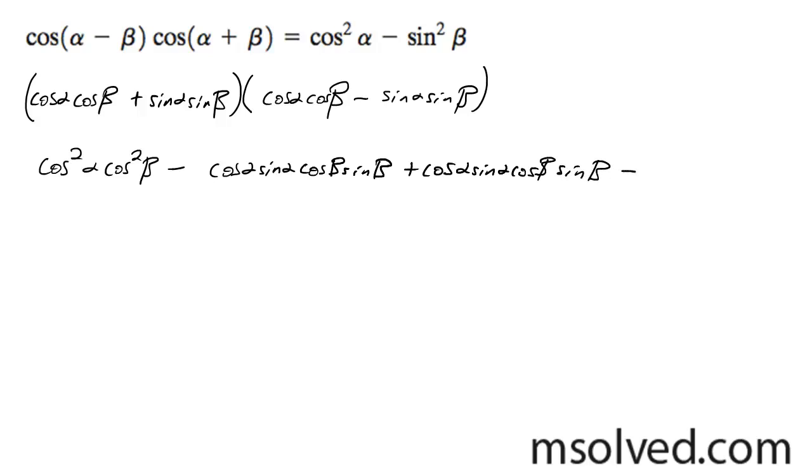And finally, these middle terms cancel out, and we're left with cosine squared alpha cosine squared beta minus sine squared alpha sine squared beta.